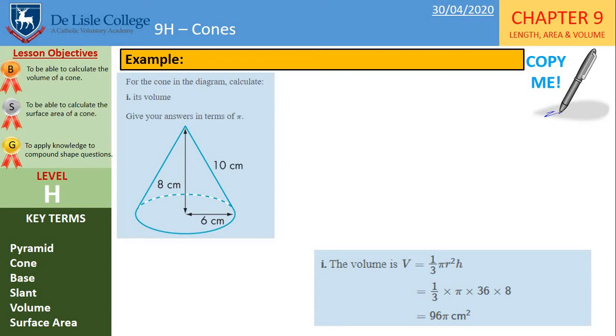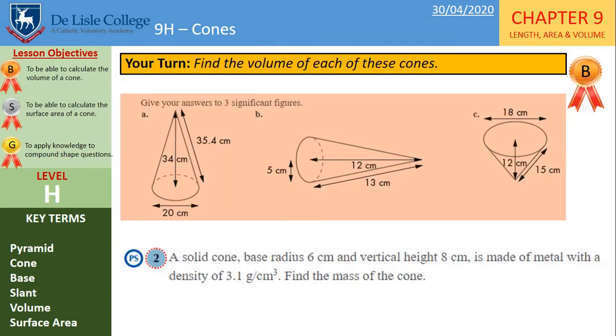Then we can simplify that to 96 pi centimeters cubed. And that is the final answer since we were told to give our answer in terms of pi. So you'll notice at this point we've not used the value of 10. So we don't need that slant height when we are calculating the volume. So let's have a go at these questions, show your working and pause the video while you work through them.